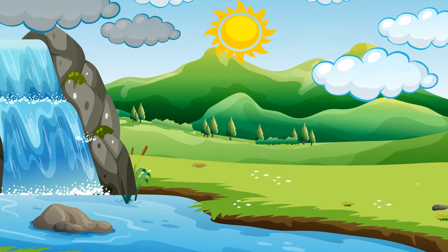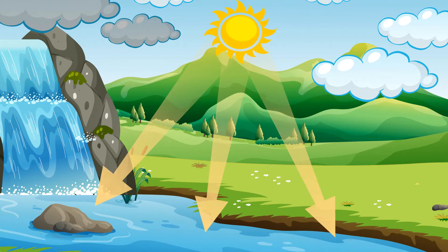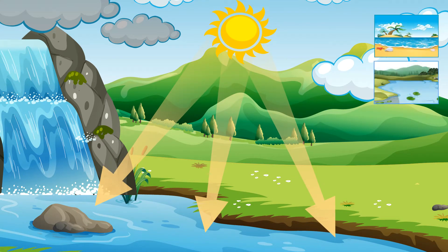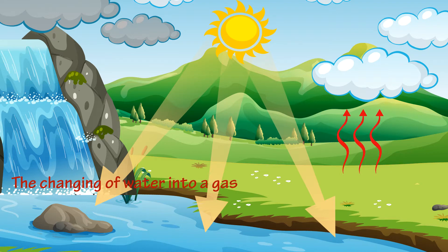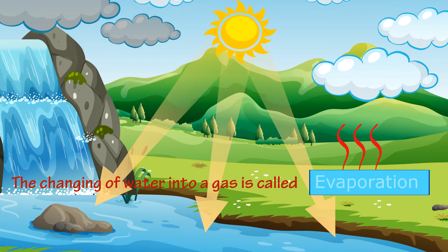The sun heats up the water from oceans, lakes, and rivers, turning it into an invisible gas called water vapor. This process, the changing of water into a gas, is called evaporation.